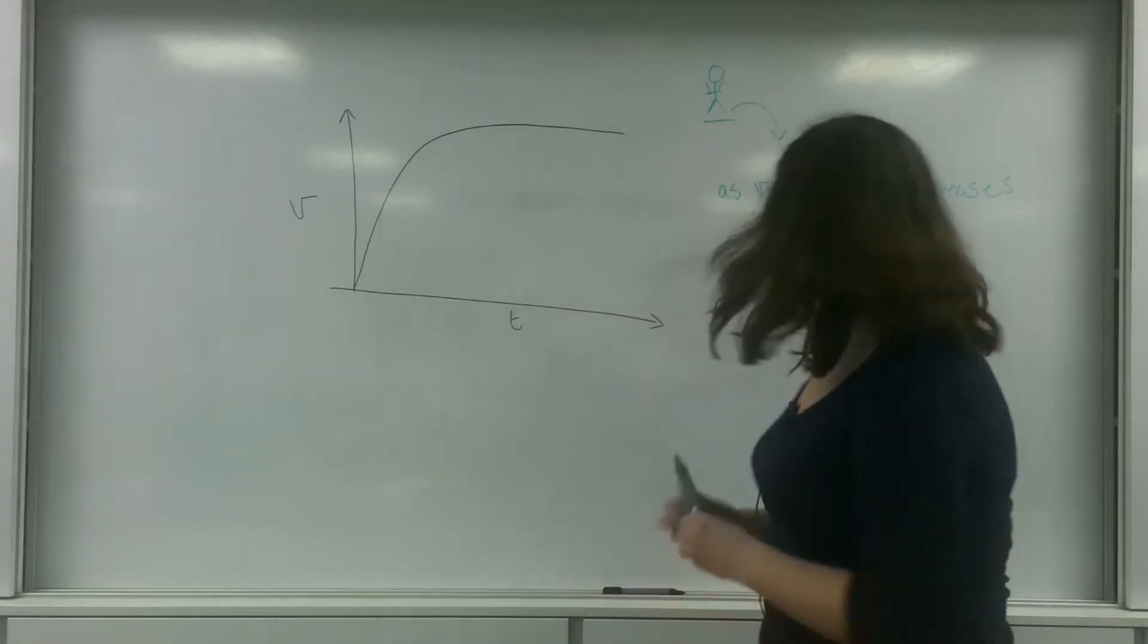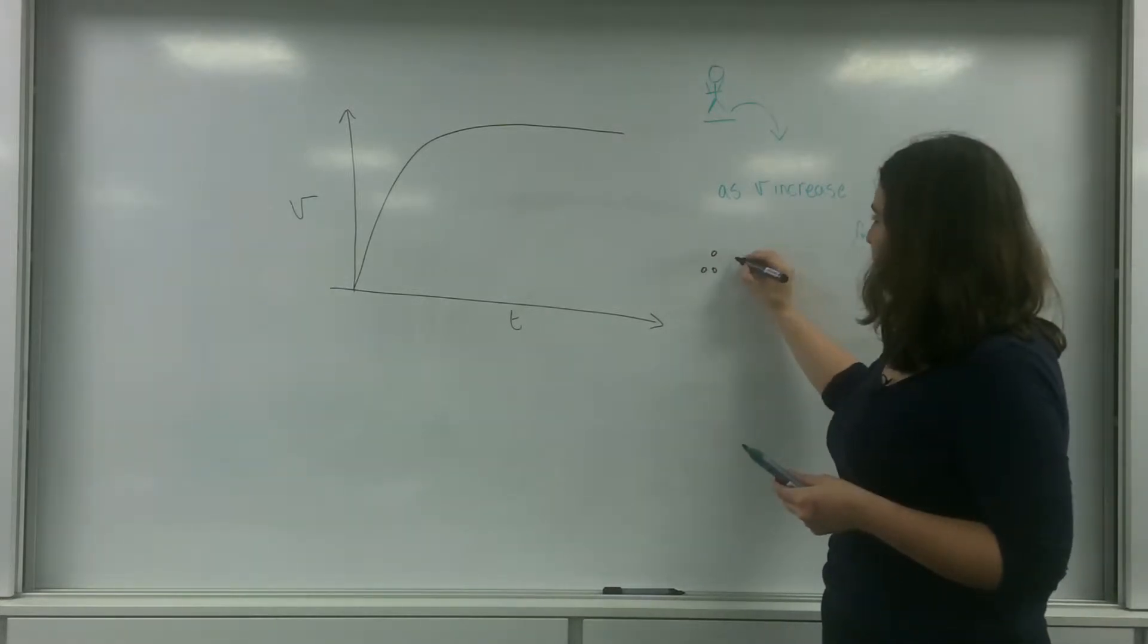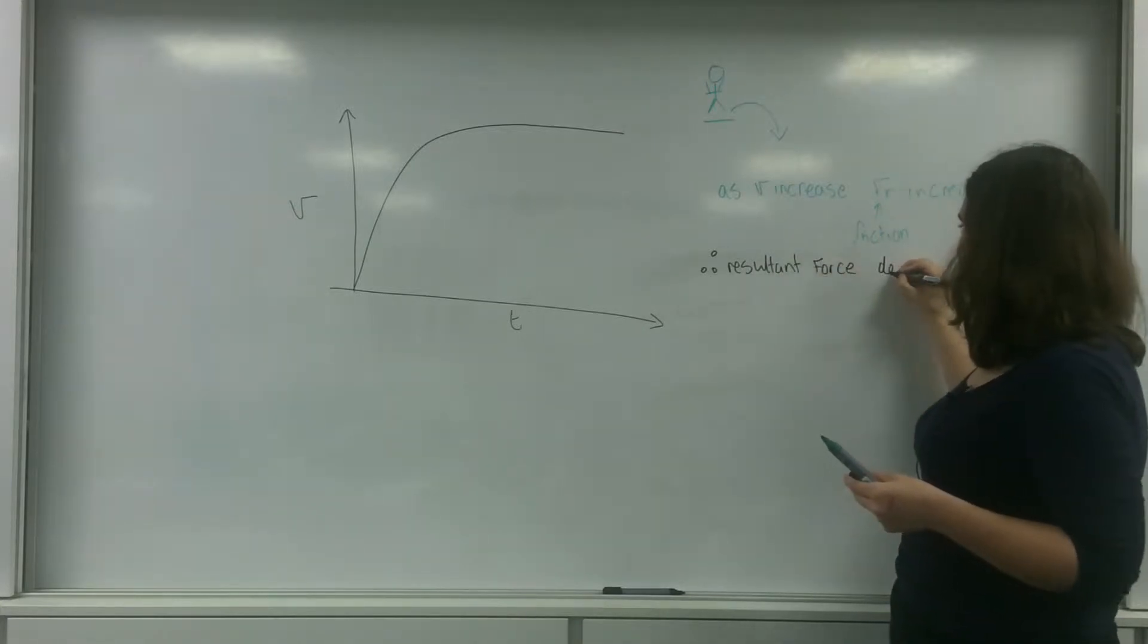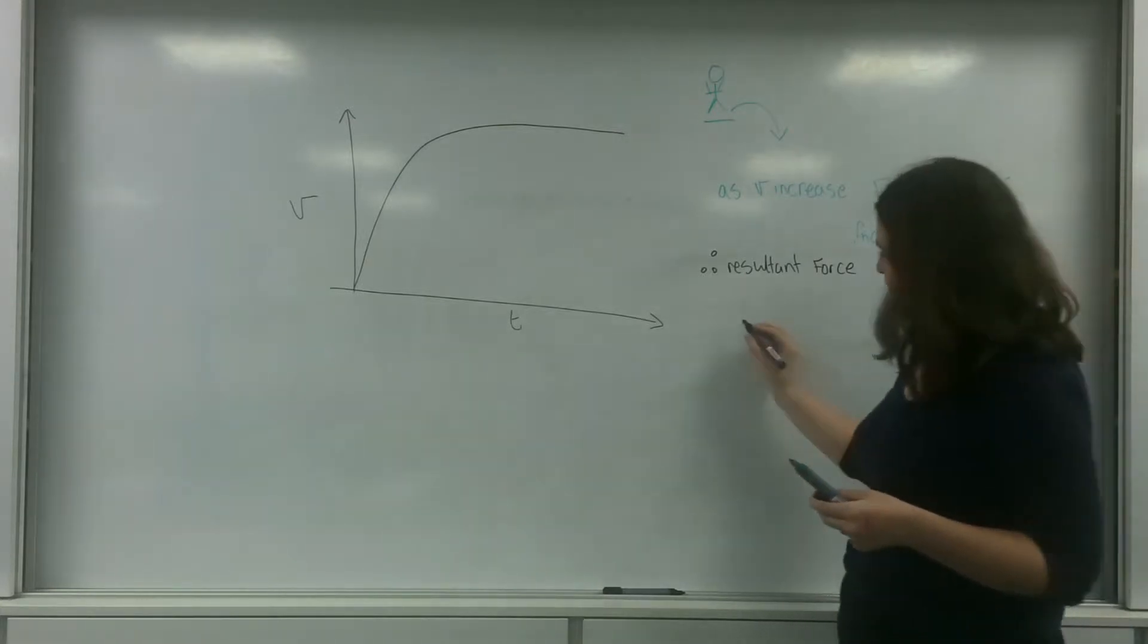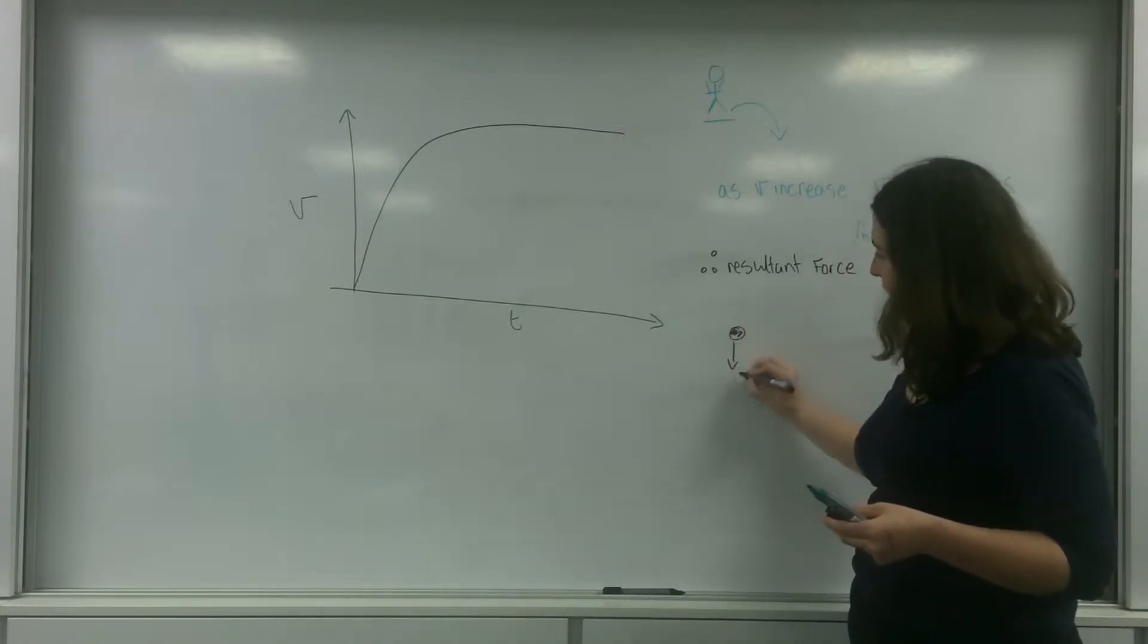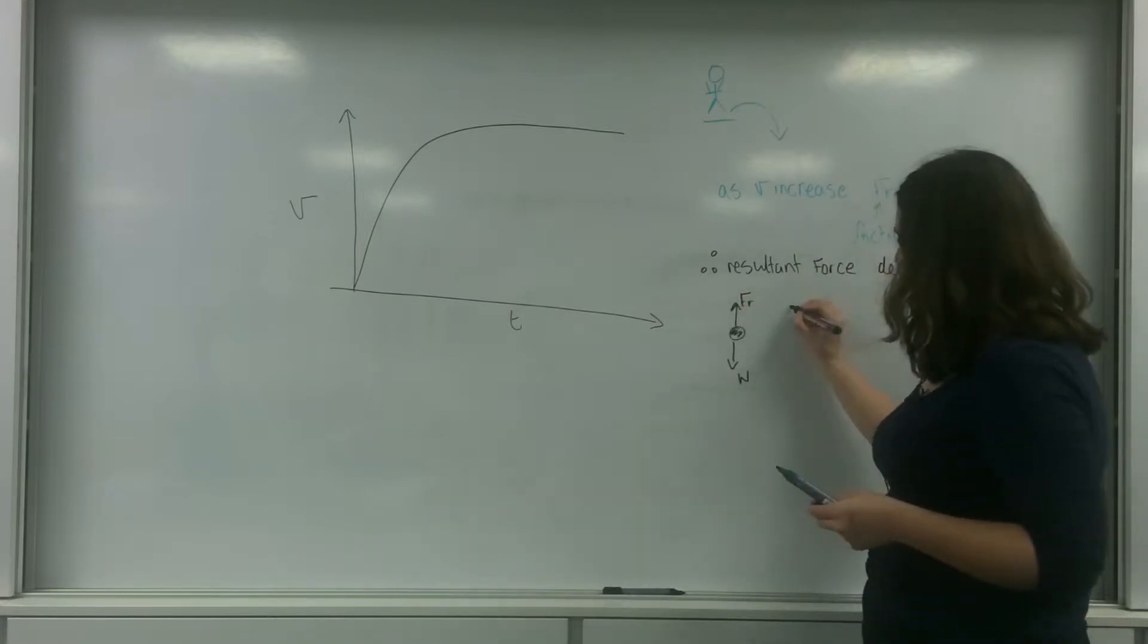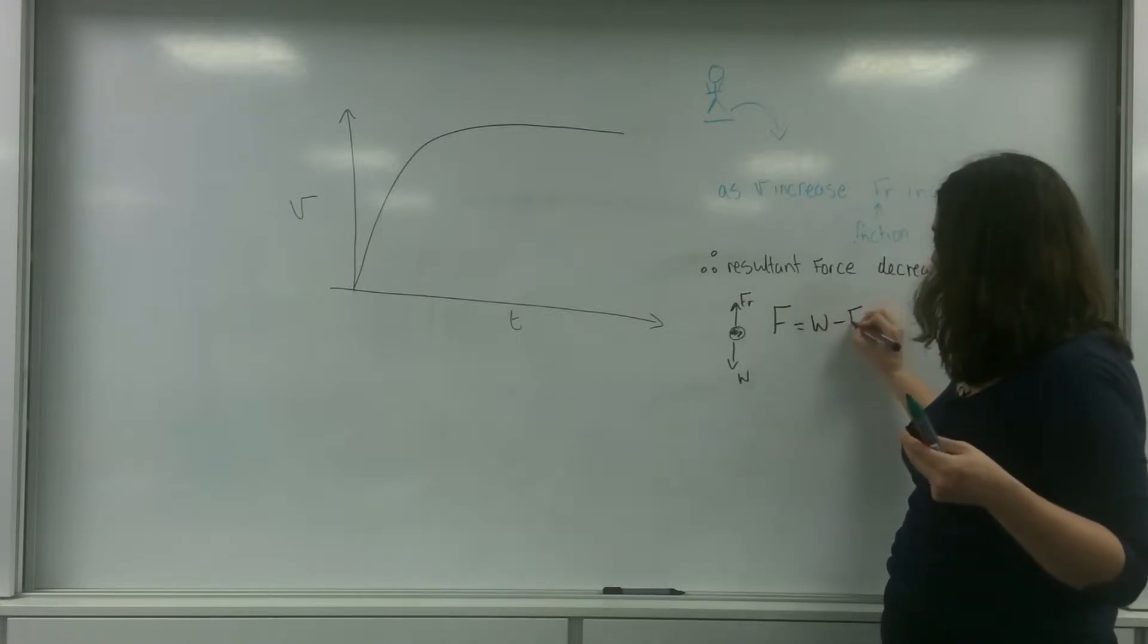This means, therefore, the resultant force decreases. So if I just draw a blob here to represent him, I've got my force or my weight downwards and I've got this friction upwards. And, of course, my resultant force, F, is going to be the weight to take away the friction.